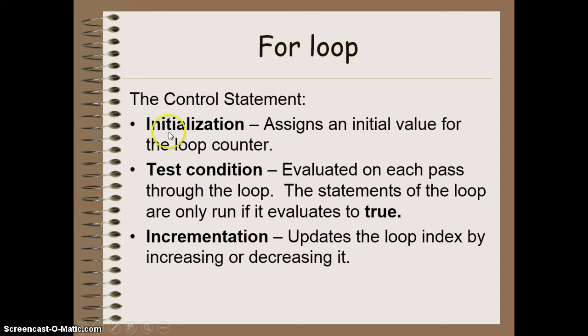So a little more closely, the initialization, this is where we're going to declare and initialize a value for our loop counter. The second section is going to be where we compare that counter to some sort of condition that we want to have passed in order to exit the program. So as long as our statement is true, we will continue to loop. As soon as it becomes false, we stop. And then finally, the incrementation value. This is what we're going to update the index by, by either increasing or decreasing its value.